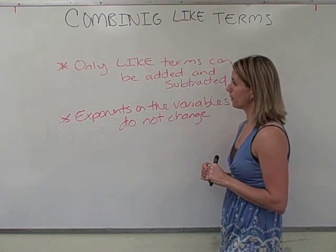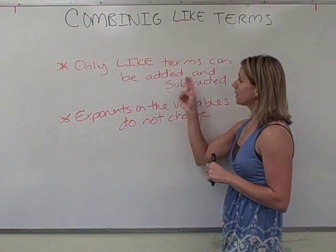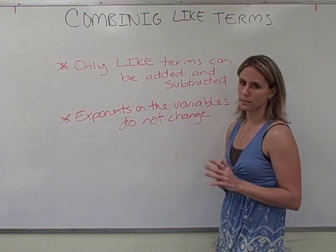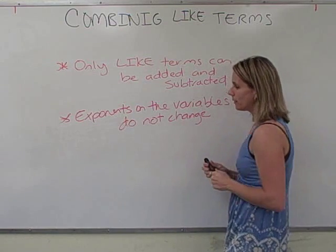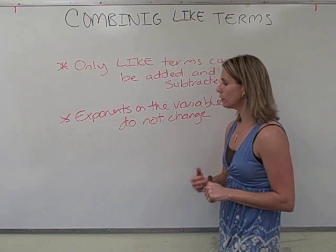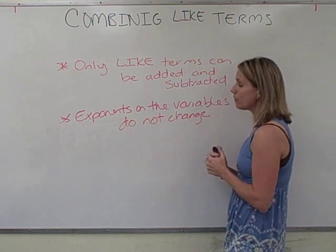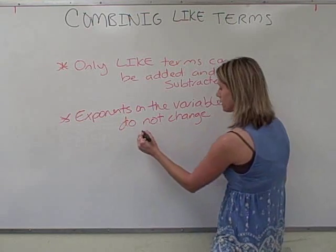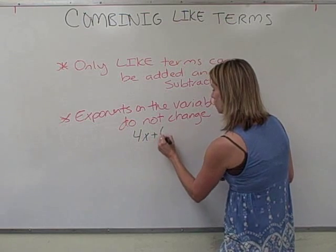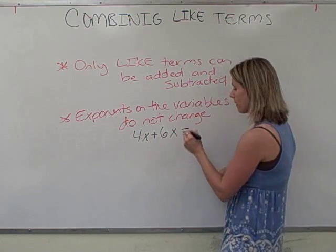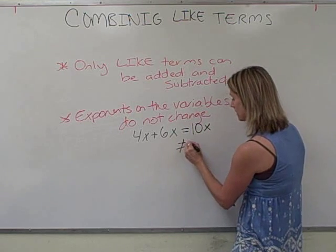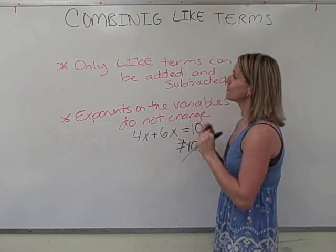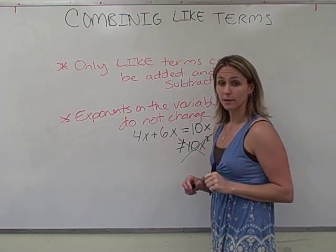So just to wrap this up, let's remember that only like terms can be added and subtracted. So make sure you have like terms before you do any adding or subtracting. Another key thing to remember is that when you do add and subtract like terms, whatever exponent is on the variables in those terms, they do not change when they're being added or subtracted. So if we do 4X plus 6X, you always want to remember that is 10X, not 10X squared. Do not do it. So this has been a review of combining like terms, and good luck to you.